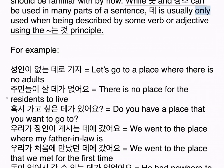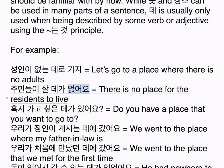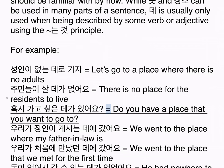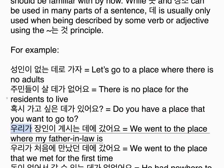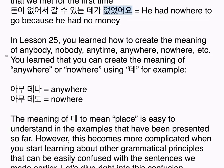For example: 성인이 없는 데로 가자 — Let's go to a place where there are no adults. 주민들이 살 데가 없어요 — There is no place for the residents to live. 혹시 가고 싶은 데가 있어요 — Do you have a place that you want to go to? 우리가 장인이 계시는 데에 갔어요 — We went to the place where my father-in-law is. 우리가 처음에 만났던 데에 갔어요 — We went to the place where we met for the first time. 돈이 없어서 갈 수 있는 데가 없었어요 — He had nowhere to go because he had no money.